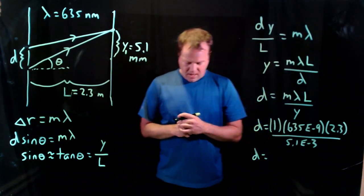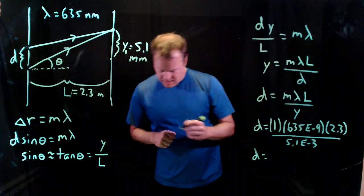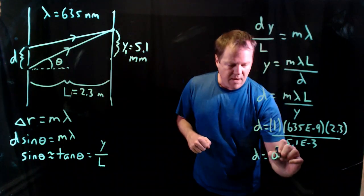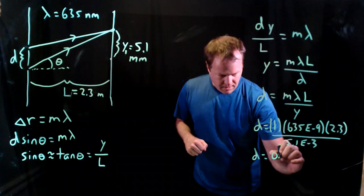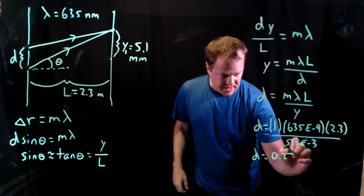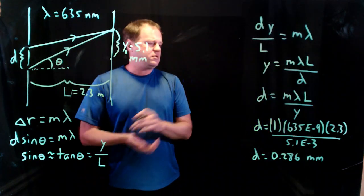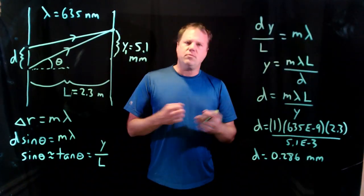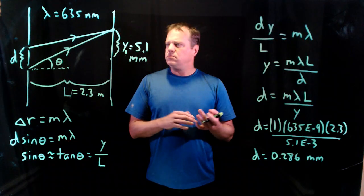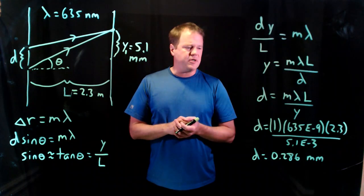And then we throw that into our calculator and I get a distance between the two apertures of 0.286 millimeters. Okay, and so yes, that's a pretty reasonable number. That's a pretty typical distance for a double slit experiment.